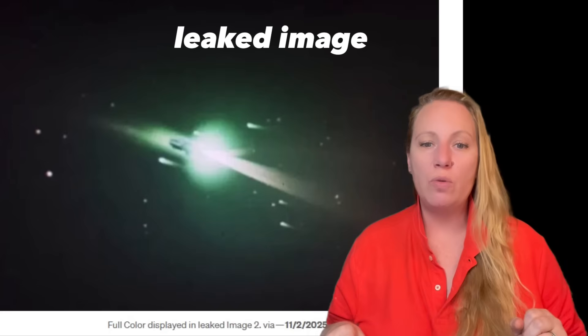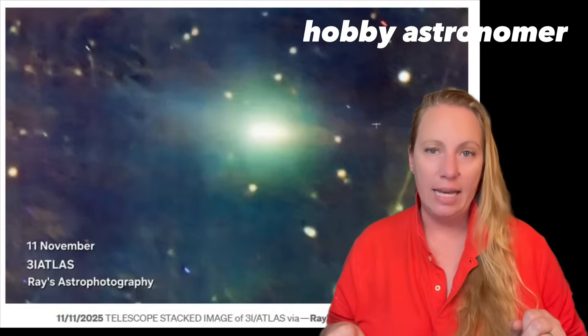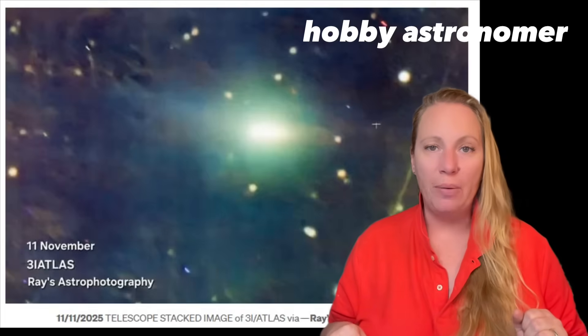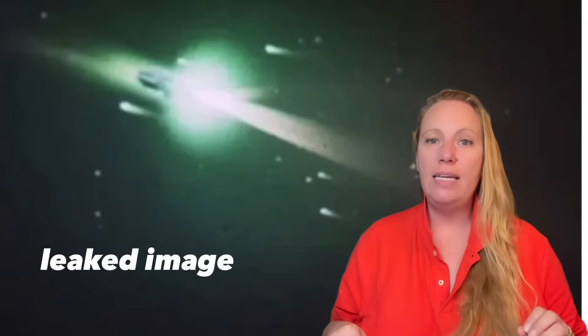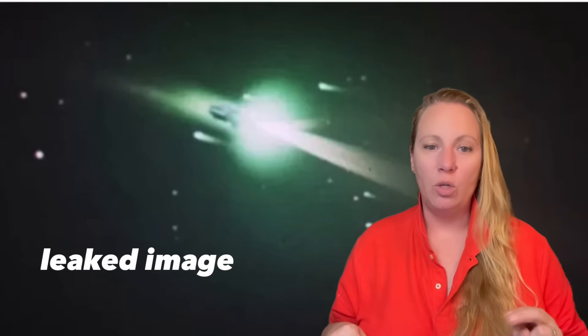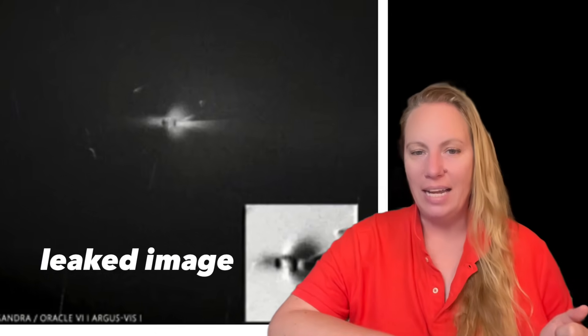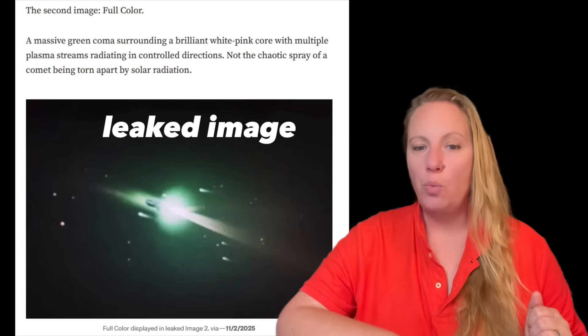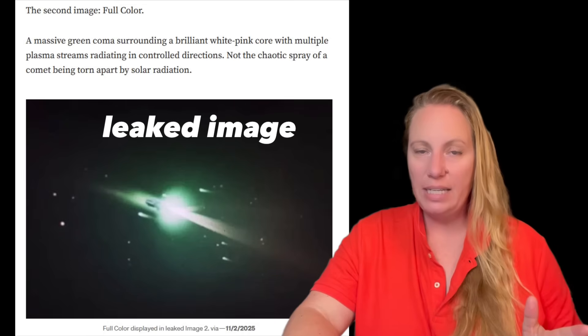Now let's get to these November 2025 images of 3i Atlas. On November 2nd, 2025, four days after 3i Atlas reached perihelion, its closest point to the Sun, it was basically hidden behind the Sun so from Earth we couldn't see it. November 2nd, two images appeared online labeled C-2025-N1 Umbra 3C, and another one named Cassandra Oracle 4 Argus VIS. One showed a geometric star-shaped emission core in black-and-white resolution. The other image displayed a green coma with white-pink plasma streams in color. These are the leaked images, guys.